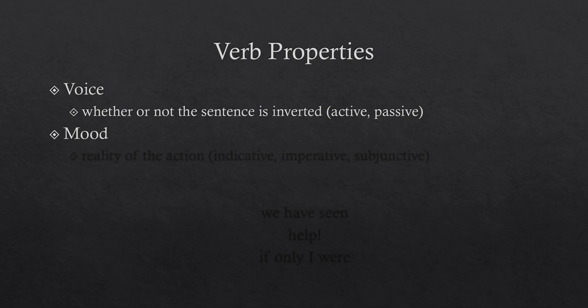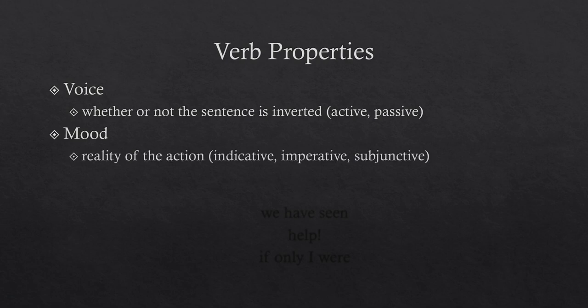Mood is a property we haven't talked about as much in Latin 1 — this is more of a Latin 2 topic. This is the reality of an action. If we're talking about an indicative verb, which is most of what we've learned so far, then we're talking about something that actually happened, is happening, or is going to happen. If I'm talking about an imperative verb, that's a different mood entirely — that means I'm giving a command, and there's no guarantee that the action is happening or will happen at all.